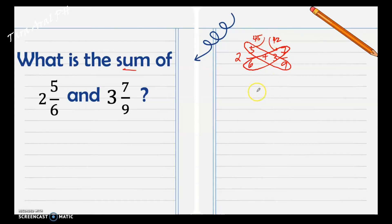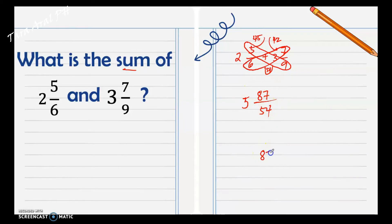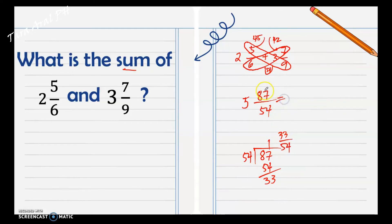Add forty-five and forty-two: that is eighty-seven. Then multiply the denominators: six times nine is fifty-four. Now add the whole numbers: two plus three is five. Since eighty-seven over fifty-four is an improper fraction, we divide: eighty-seven divided by fifty-four equals one remainder thirty-three. So we have one and thirty-three over fifty-four, then add the whole number five to get six and thirty-three over fifty-four.